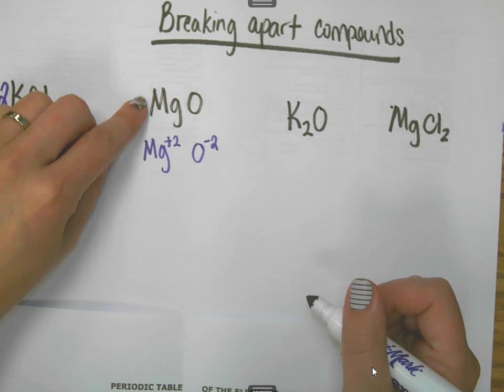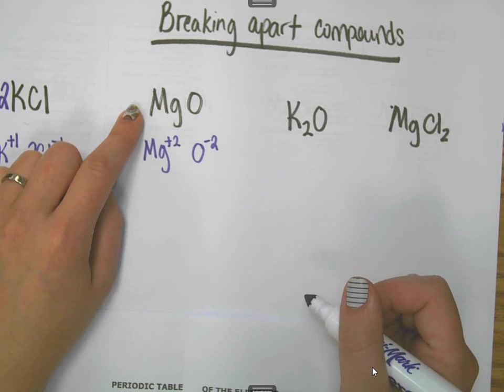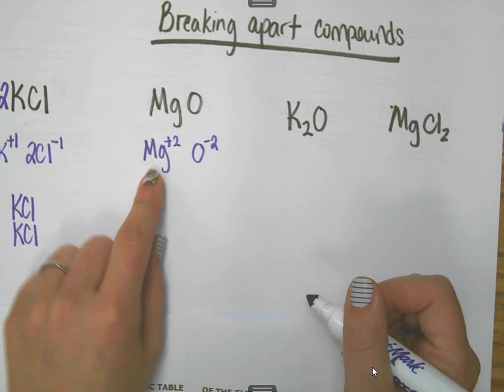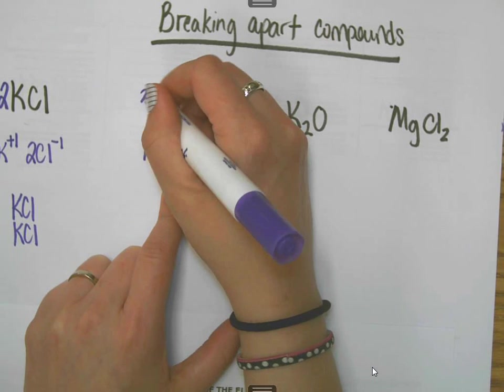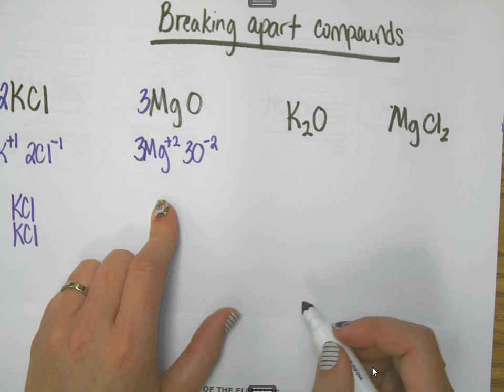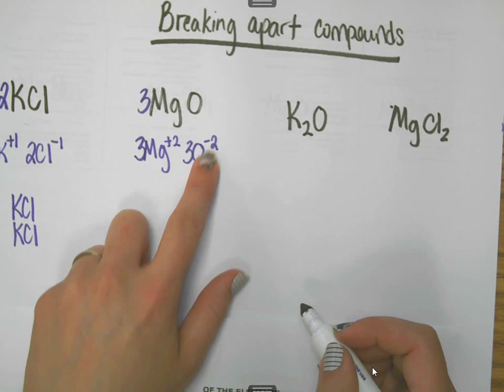If one of these breaks up into that, if there was a coefficient in front of it like a 3 or a 4 or a 2, I would just multiply this to equal whatever it broke up into. This time I'm just going to make it like a 3. So then I would just multiply both of those by 3. It breaks up into 3 magnesium 2 pluses and 3 oxygen negative 2.